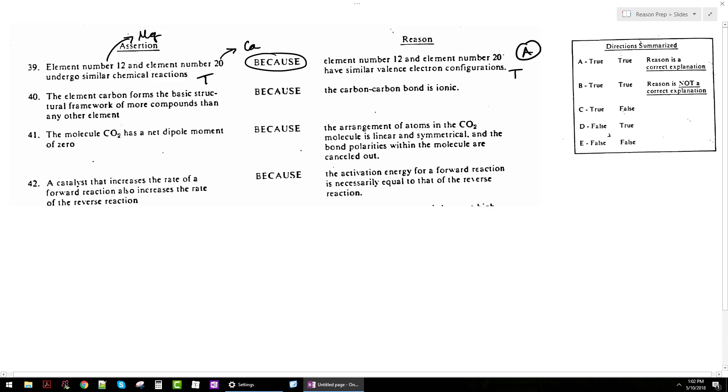Question 40: the element carbon forms the basic structural framework of more compounds than any other element. That is true - kind of a factoid. You need to know that organic compounds are really numerous. When you start linking together carbons to create chains and add in oxygens and nitrogens, you can create a whole ton of different compounds. Carbon-based organic compounds do this - there's more of them than any other. So that's true.